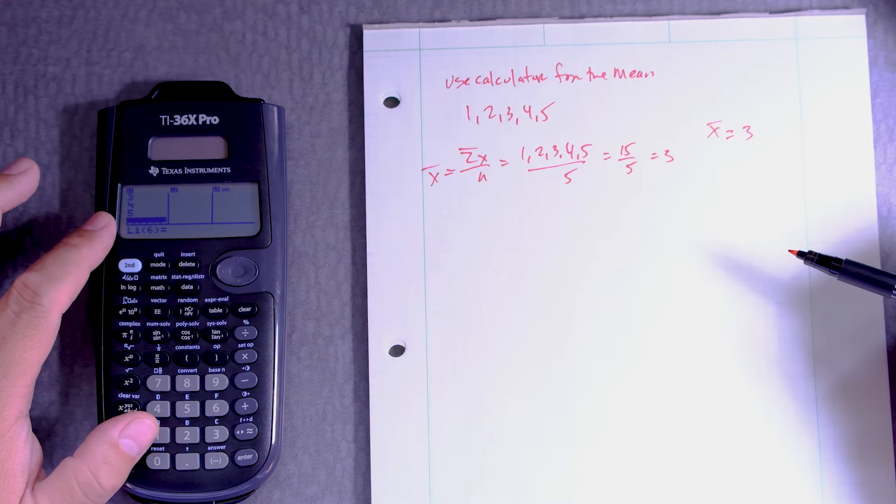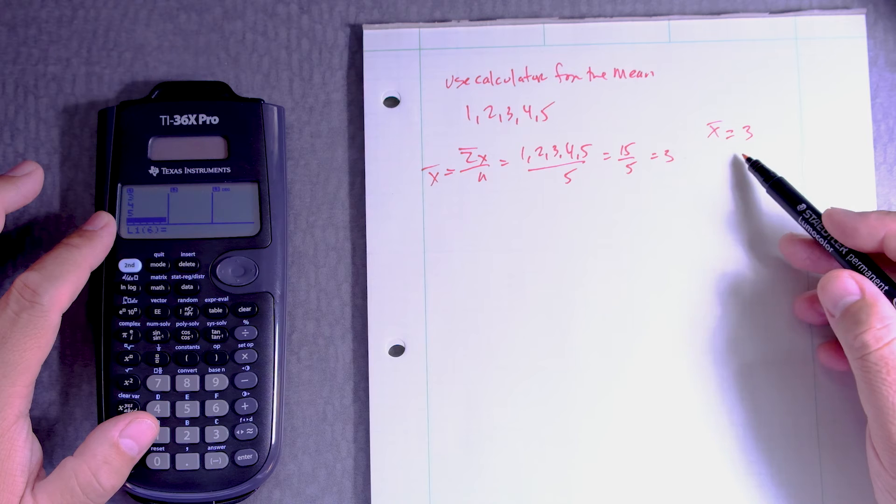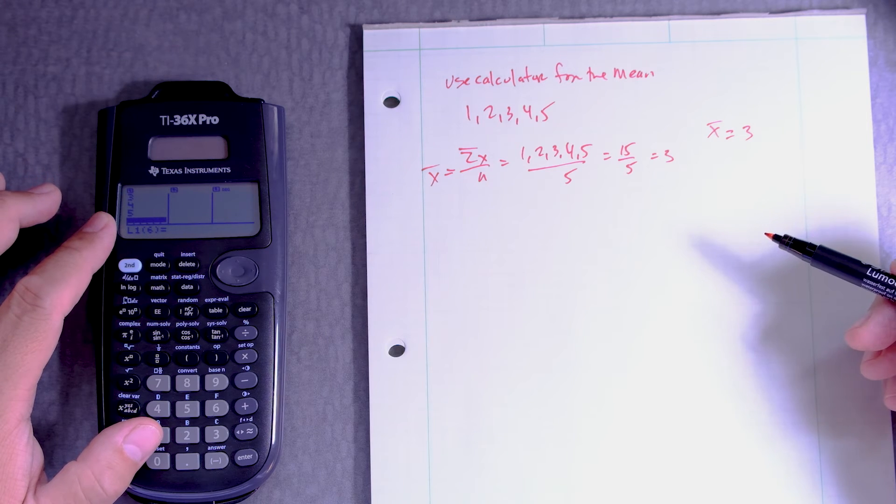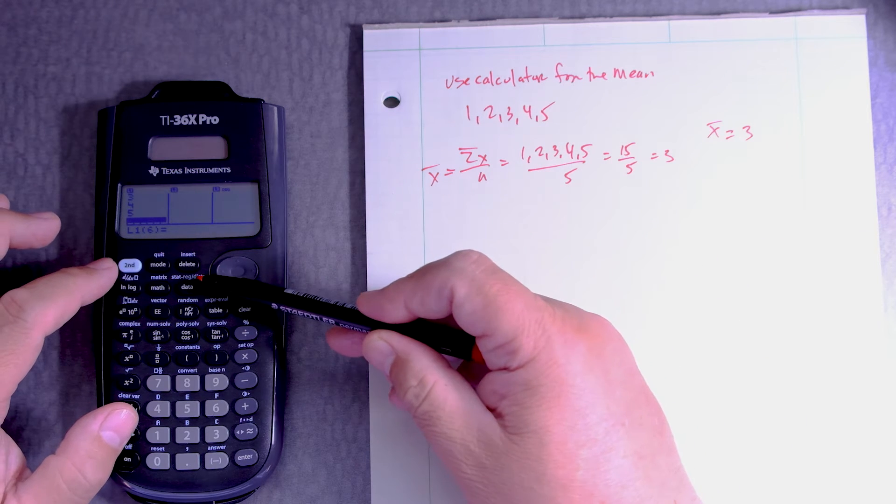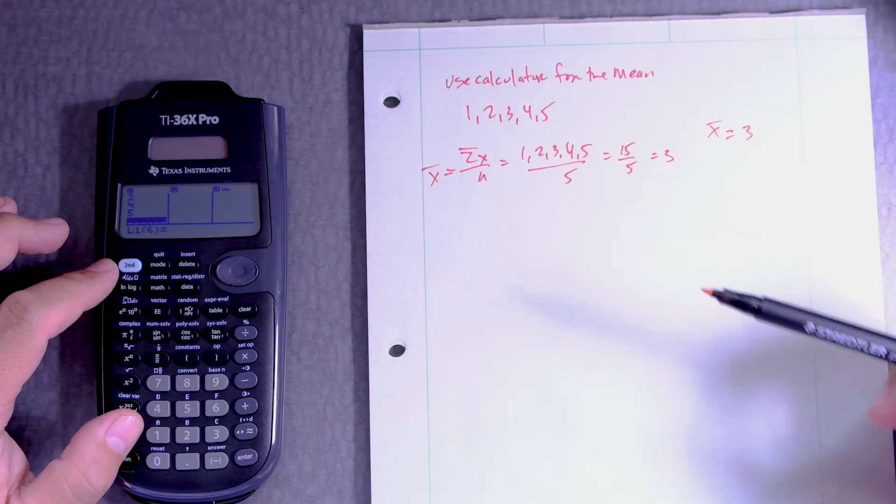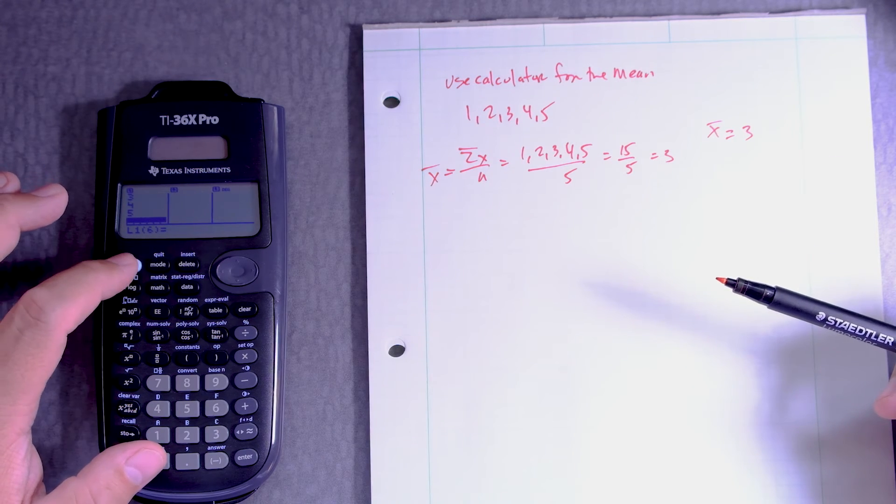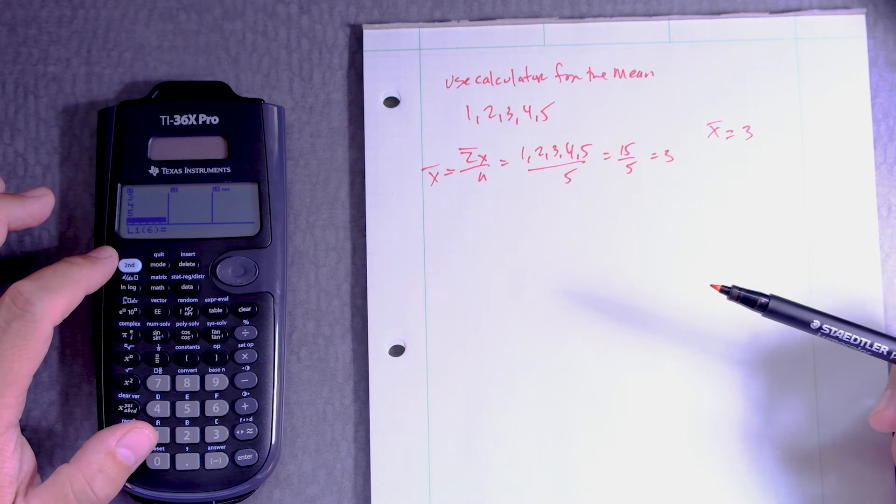Now what I want to do is calculate the mean. To do that, right here in light blue it says stat distribution. So we click on the second button to activate the light blue.